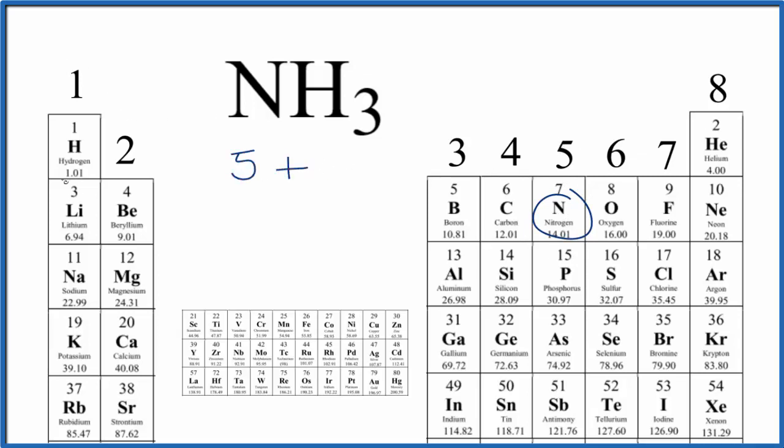And then hydrogen, over here in group 1, it has 1 valence electron. We have these 3 hydrogens. Multiply that together, we get 5 plus 3, 8 total valence electrons for the NH3 molecule.